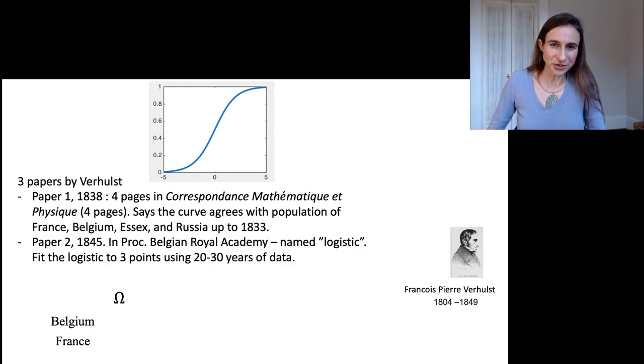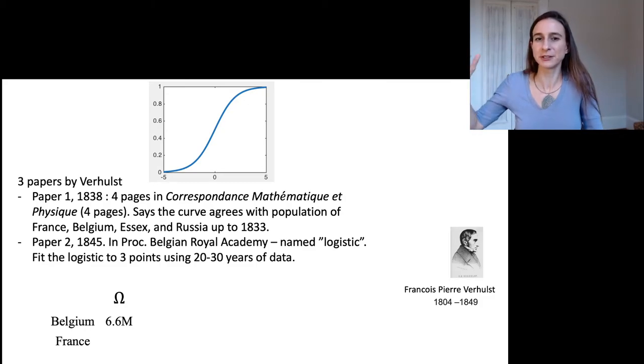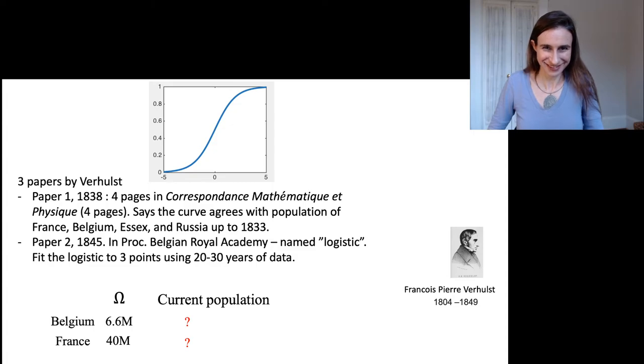I'll show you what he guessed. For Belgium, he said the saturation limit would be 6.6 million people, and for France, 40 million people. You could think about what's the current population of Belgium and France, and how close were Verhulst's estimates. Maybe I'll leave that for homework.